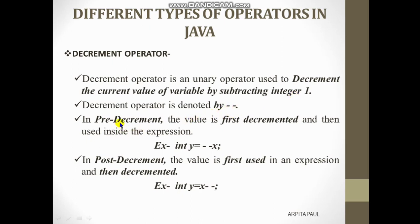There are also two types: pre-decrement and post-decrement. In case of pre-decrement, the value is first decremented and then used inside the expression, written as int y = --x. In case of post-decrement, the value is first used in an expression and then decremented, written as int y = x--. The old value of x is used first, and then it will be decremented. This is how the decrement operator works.